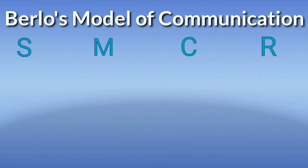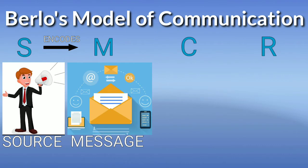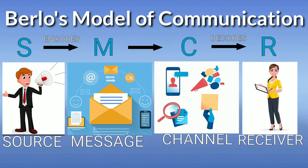As a whole, the SMCR model relies on four key elements. Source: the person who originates the message and translates the information into a message. Message: the content that is being communicated. He sends the message through a certain channel — the medium used to transmit the message. Then the receiver decodes the message — the receiver is the person whom the message is directed toward. This model was first developed in 1960 by David Berlo, academician and founder of the Communication Department at Michigan State University.